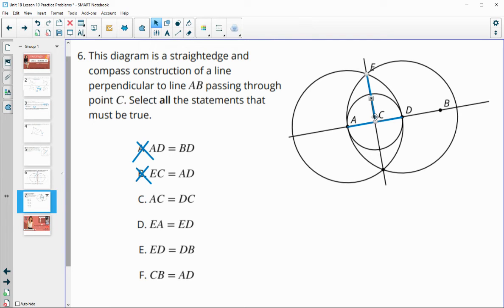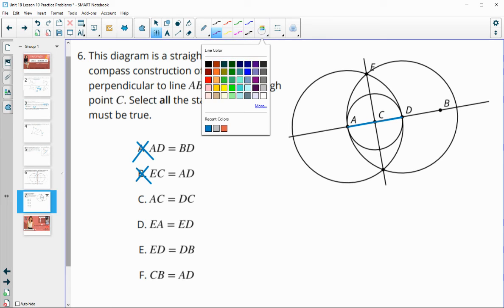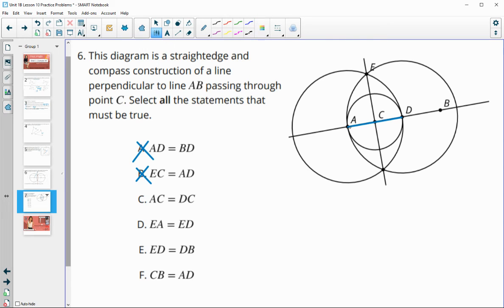Option C: is AC congruent to DC? That would be true because this is the perpendicular bisector, so C would be the midpoint, so AC and CD would be the same length.